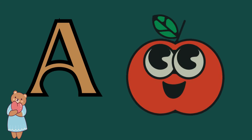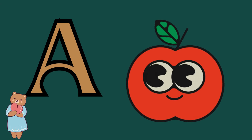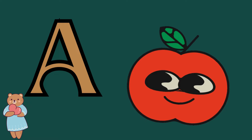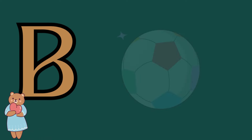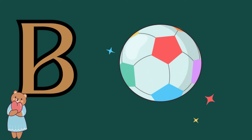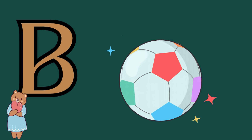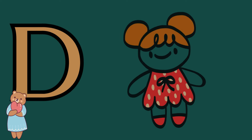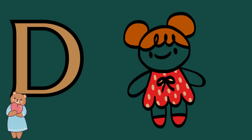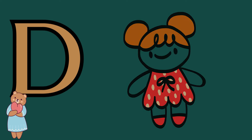A is for apple, a-a-apple. B is for ball, b-b-ball. C is for cat, c-c-cat. D is for doll, d-d-doll.